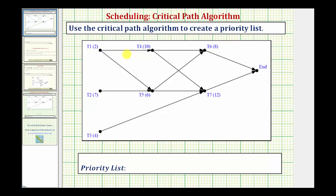So if we can find a path that takes longer, this would not be the critical path. Starting at task one again, if we went from task one to task five, to task seven to the end, that would be two plus six plus 12 — also 20 hours. If we went from task one to task four, to task seven to the end, that would be two plus ten plus 12, or 24 hours — that would take longer.